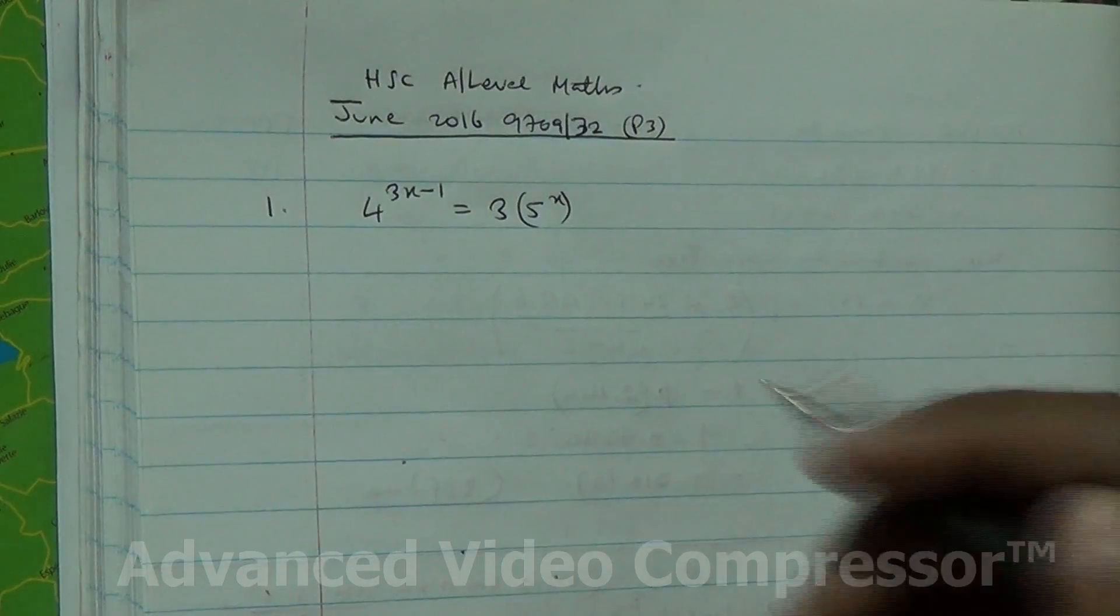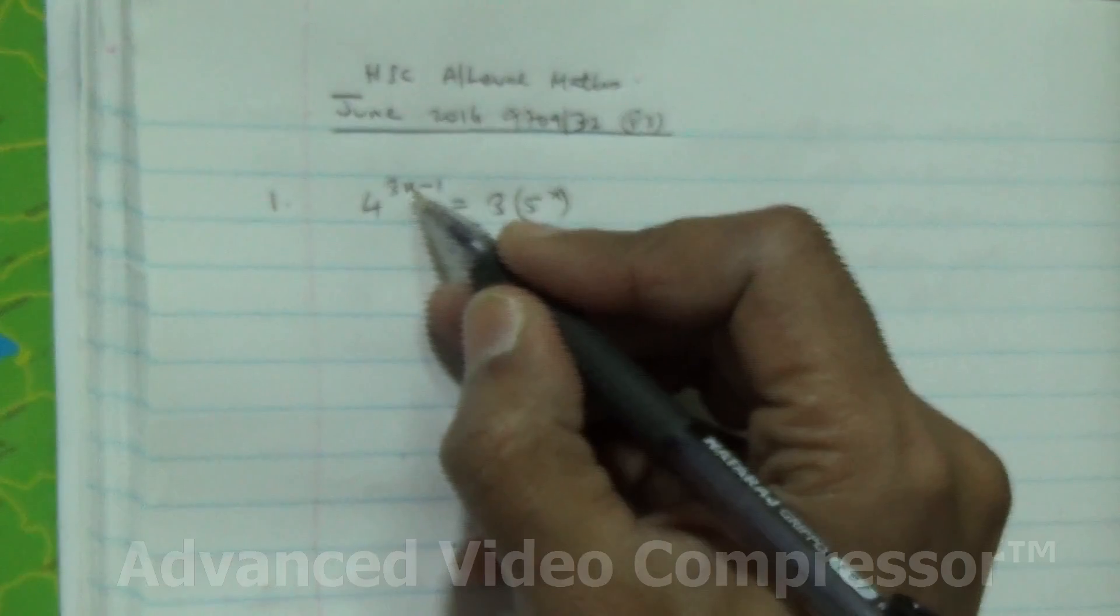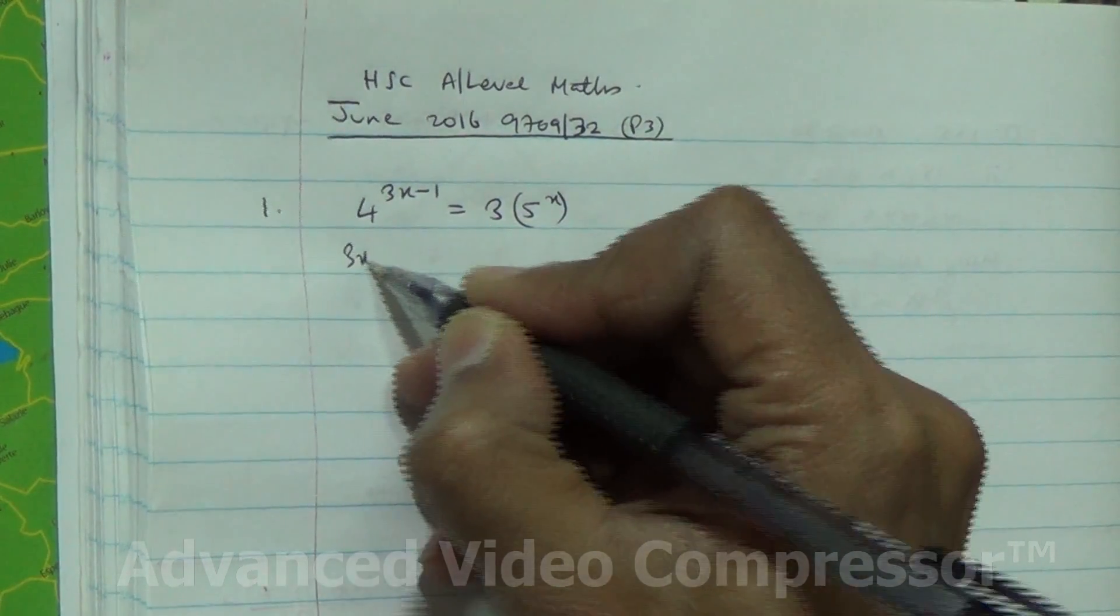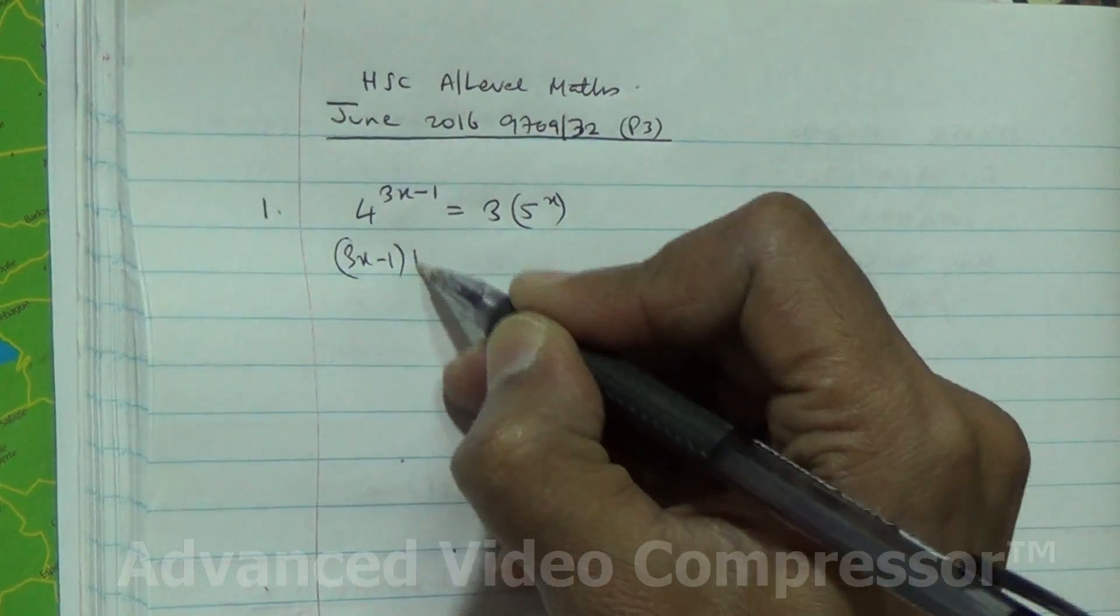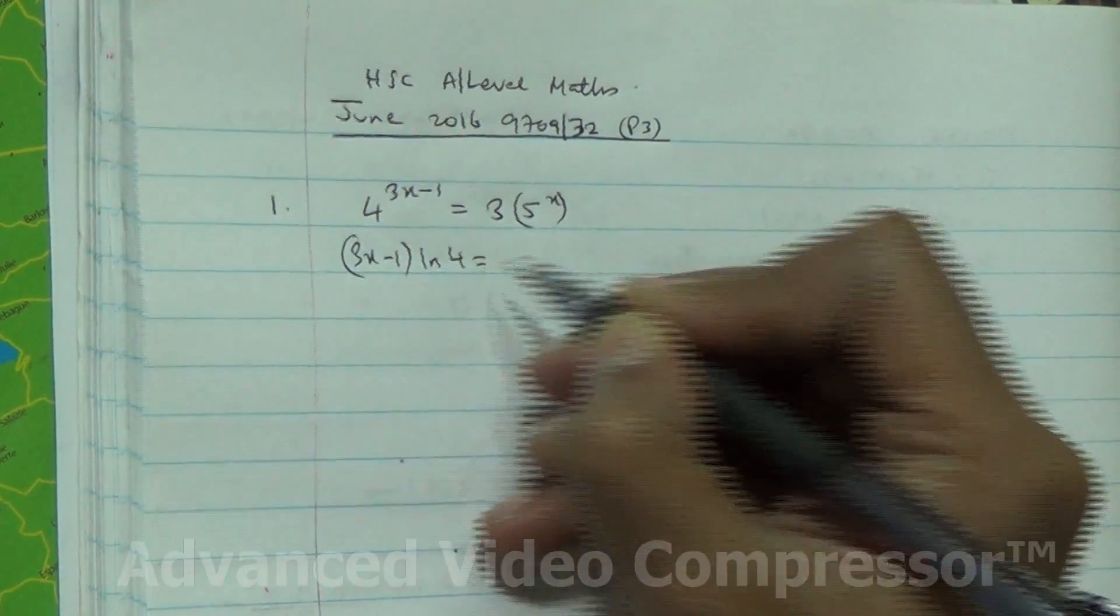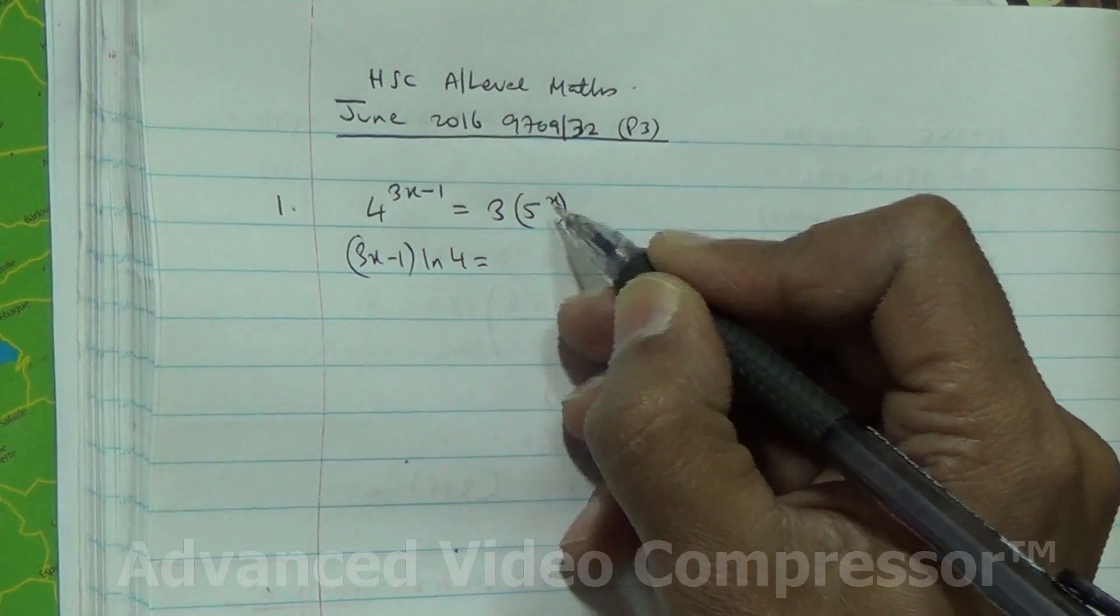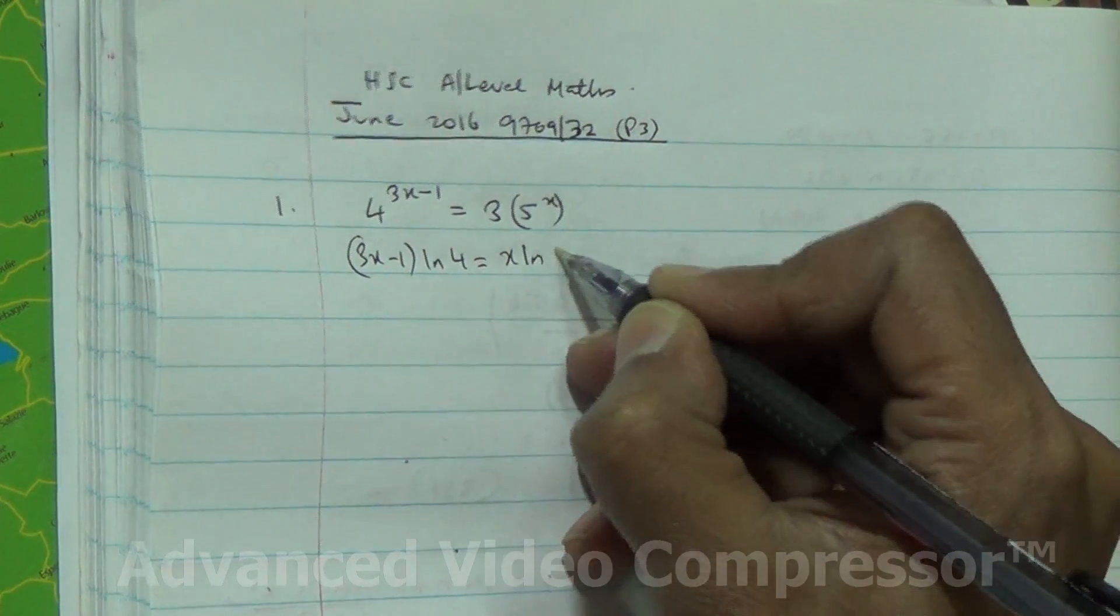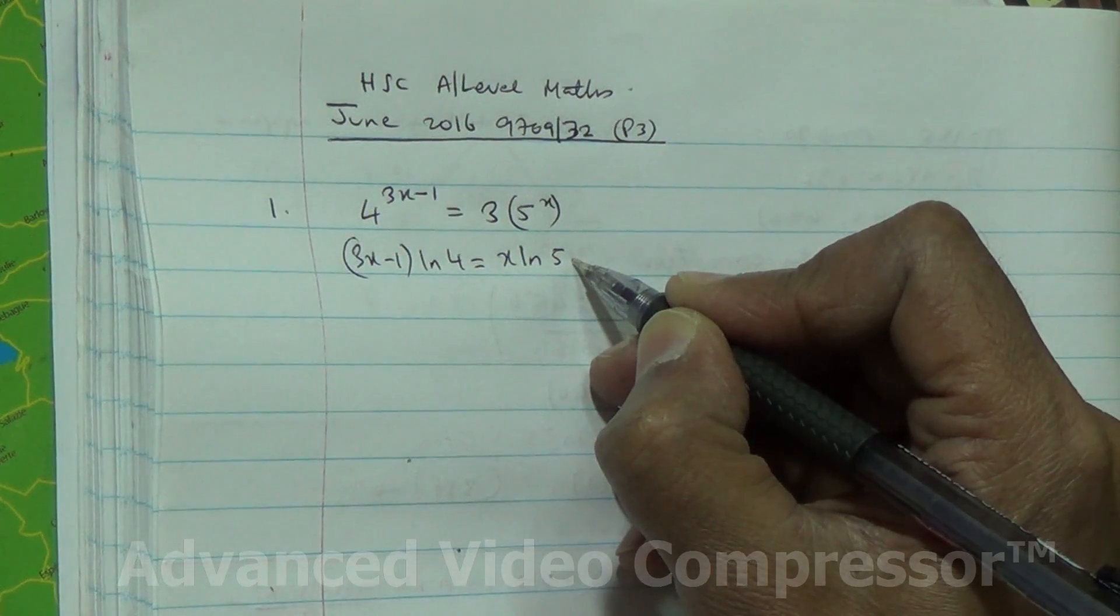So here we are. To solve, we're going to make the power the coefficient, so that becomes 3x minus 1 ln 4 is equal to x ln 5 times ln 3.